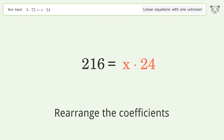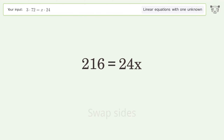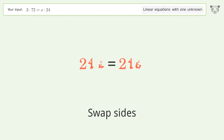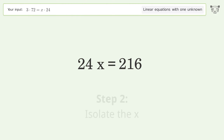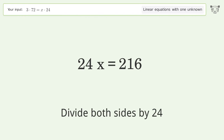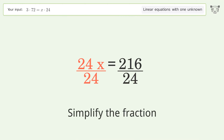Rearrange the coefficients, then swap sides. To isolate x, divide both sides by 24, then simplify the fraction.